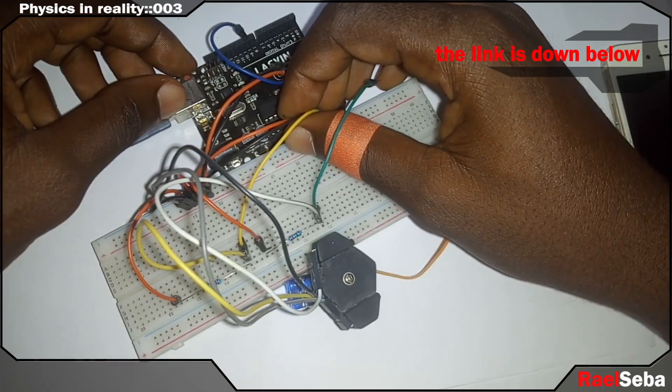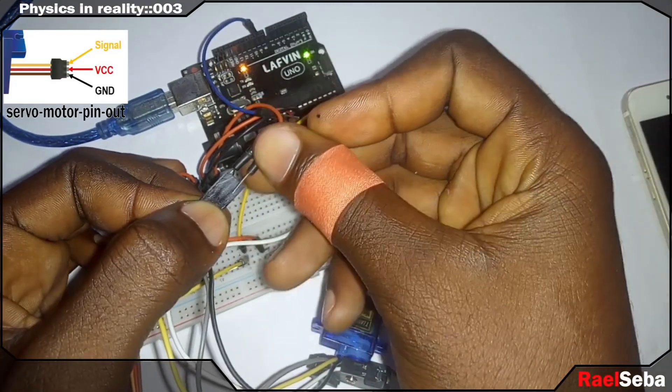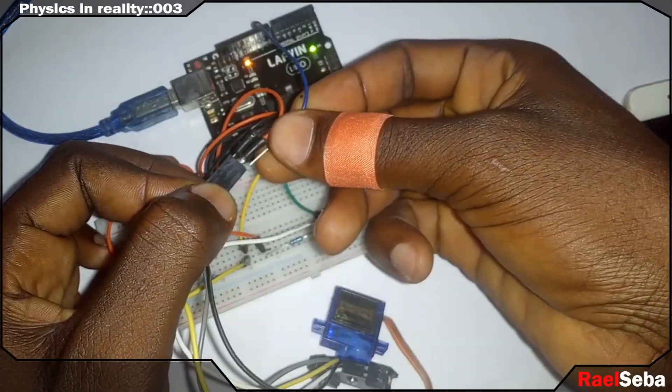For the servo, I connect ground to ground, VCC to 5V, and signal wire to pin 9.